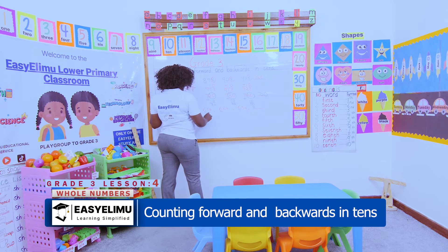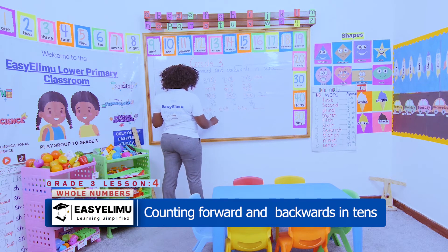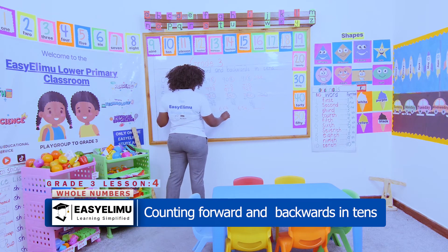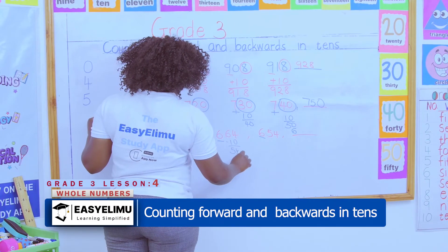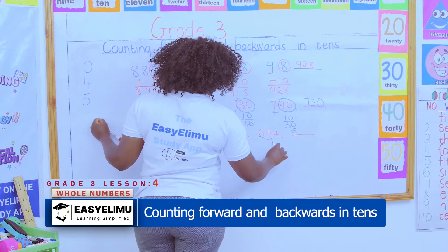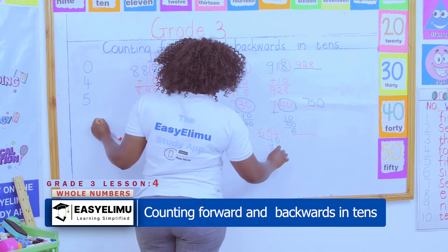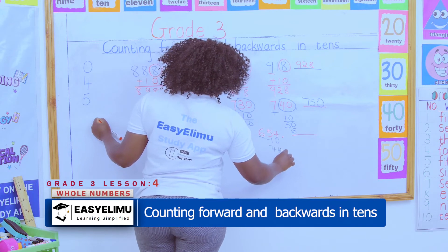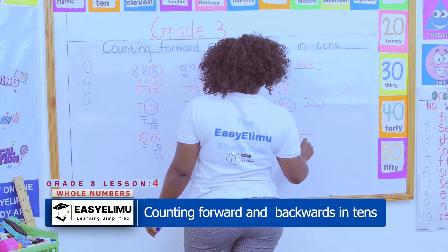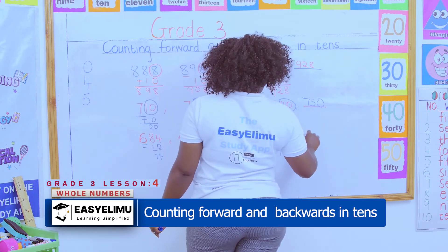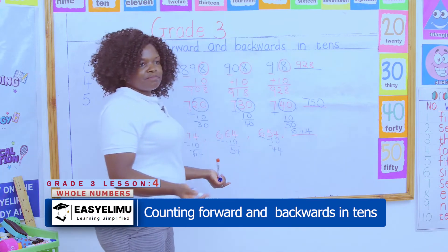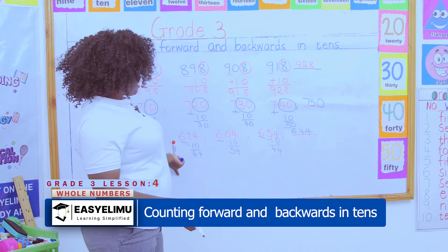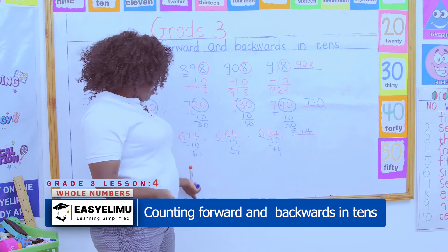If I reduce 84 by 10 I get 74. If I reduce 74 by 10 I get 64. If I reduce 64 by 10 I get 54. If I reduce 54 by 10 I get 44. So our answer here will be 644. Is there any problem with counting forward and backwards?